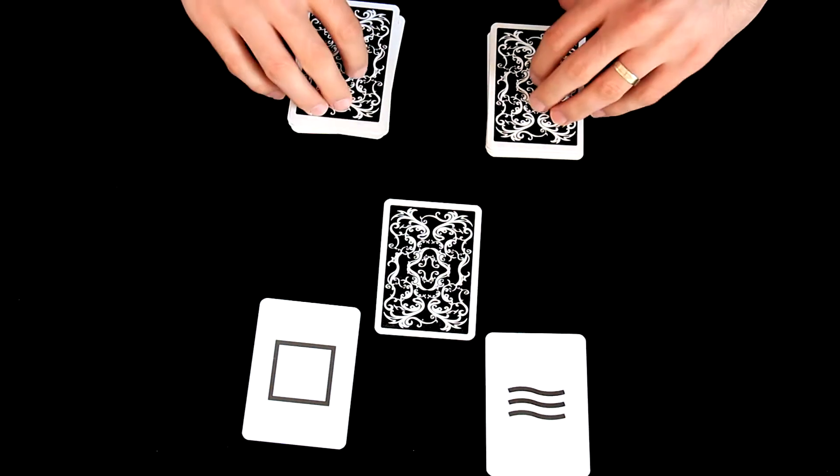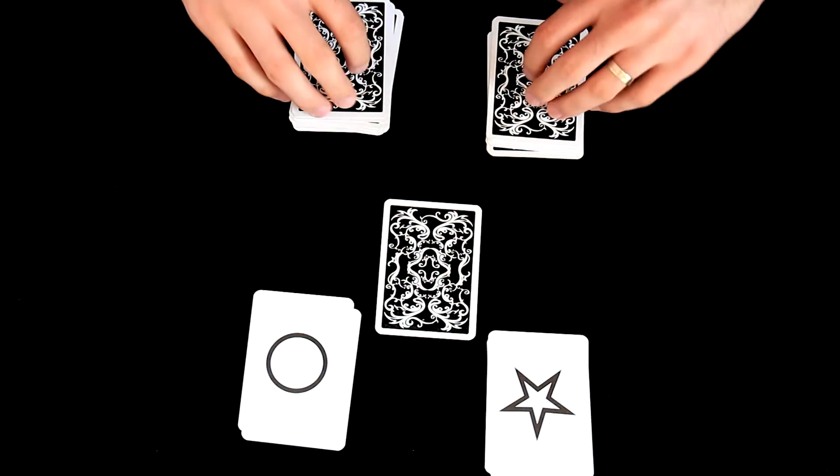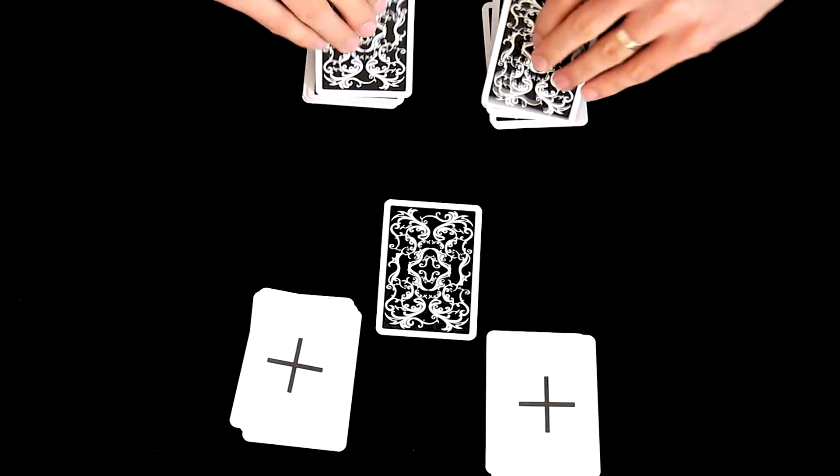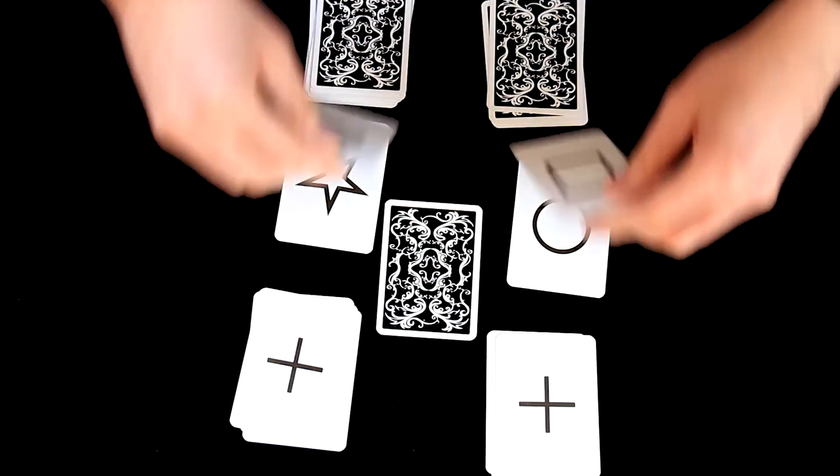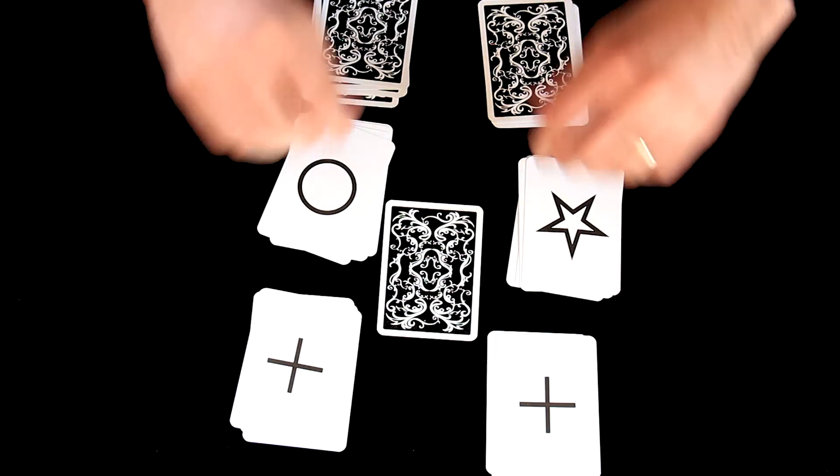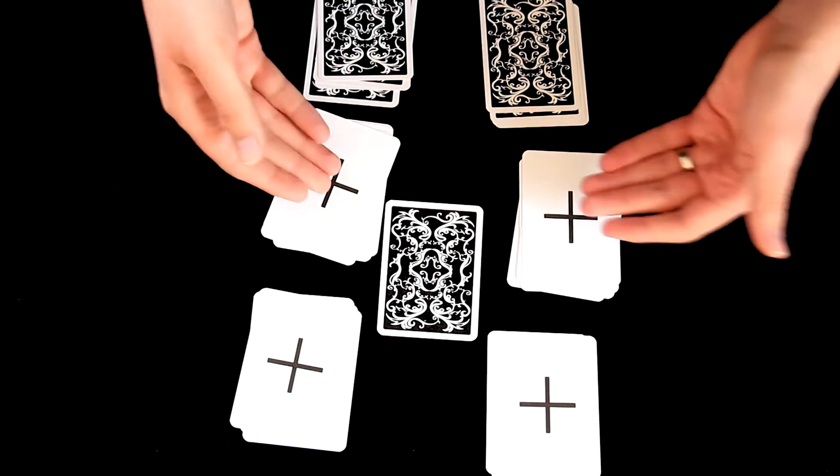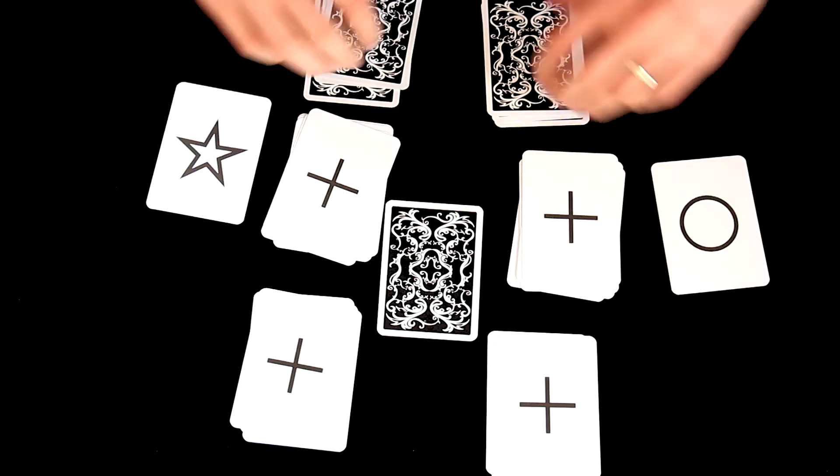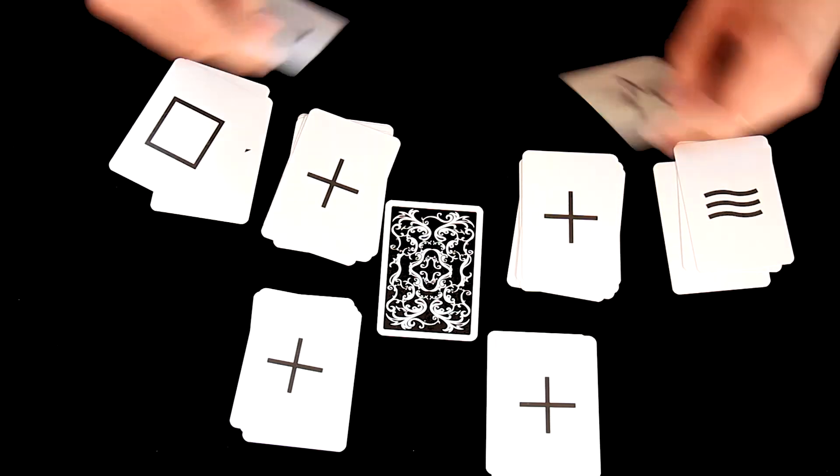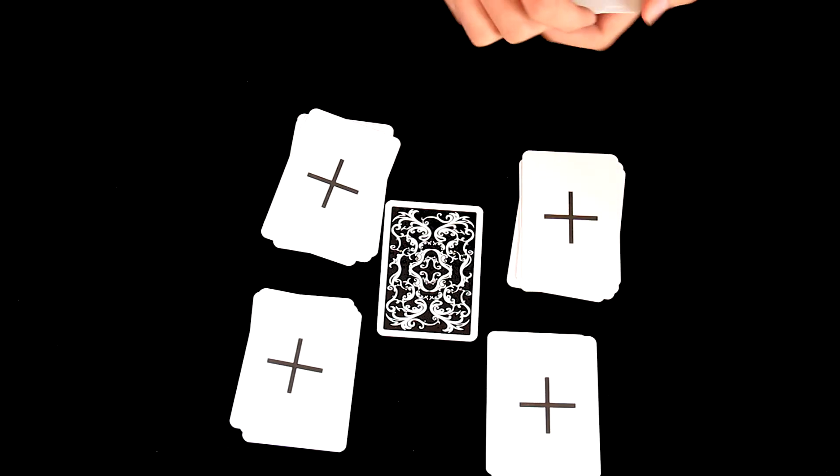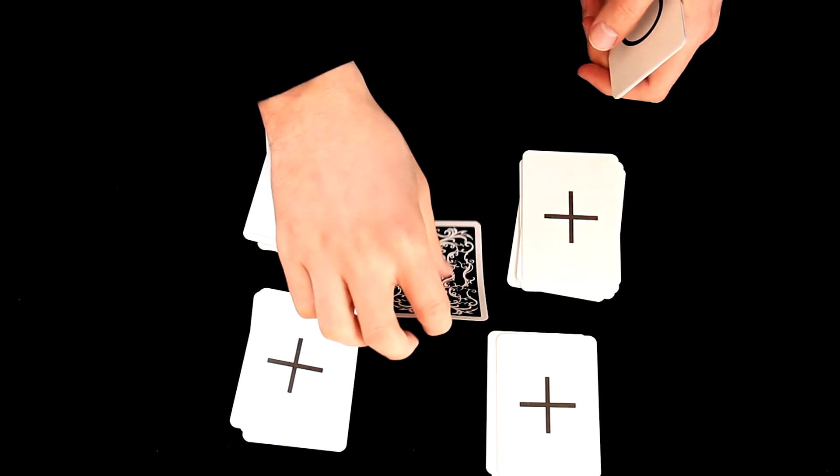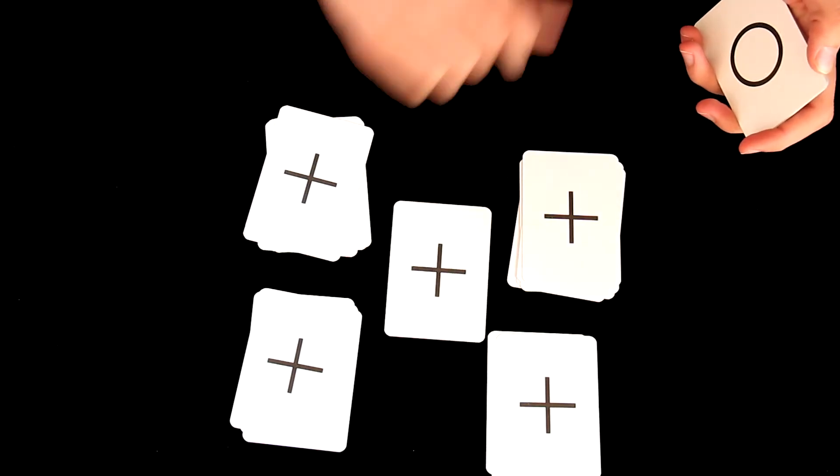You will just search for matching symbols like this. So here is a first match. Continue, and by the time you will see another match which is here, and you will continue but there will be no more matches. And then you finally reveal that the symbol that was selected by spectator is another match.